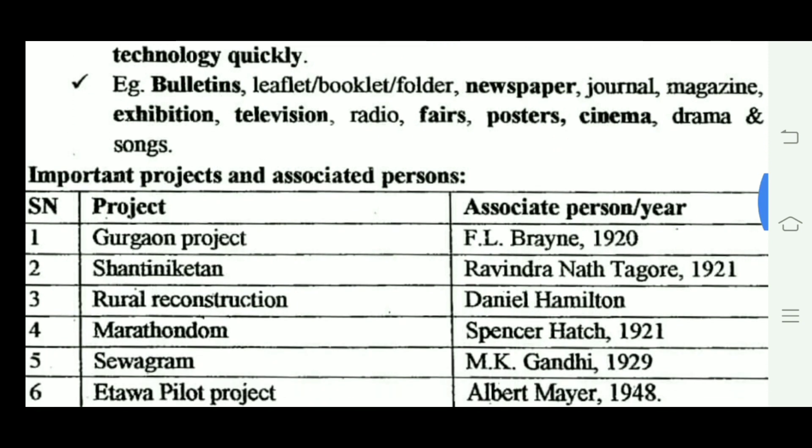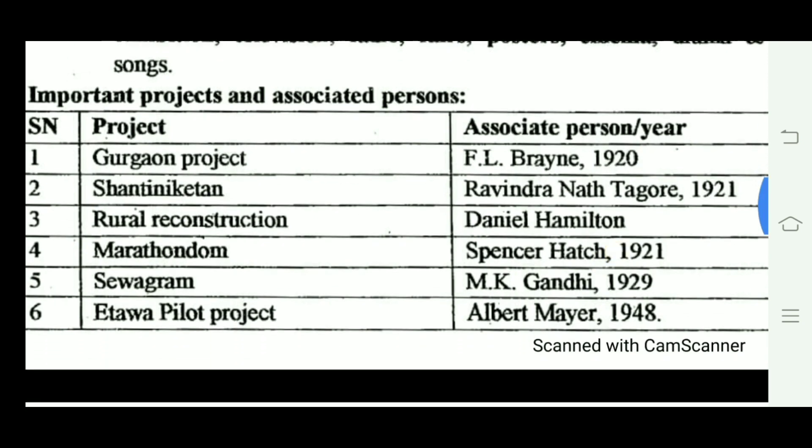The Gurugram Project was started in West Bengal in 1921. The Shriniketan Project was associated with Rabindranath Tagore in West Bengal. The Gurugram Project was led by F.L. Brayne in West Bengal. Rural Reconstruction was associated with Daniel Hamilton, who introduced the model village concept.